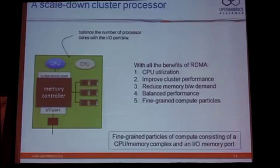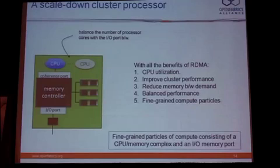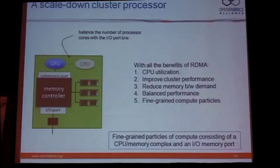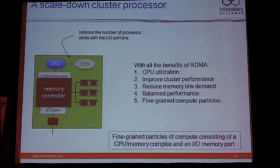So if you do this, really what you've got is what I would call a scale-down cluster processor — sort of the inverse of scale-up. Rather than add more and more CPU, maybe you start taking CPUs away until you get to the point where whatever the commodity underlying wire speed of our RDMA-enabled Ethernet port happens to be, you put the right number of cores there to match that capacity, and those cores are strictly devoted to application processing.